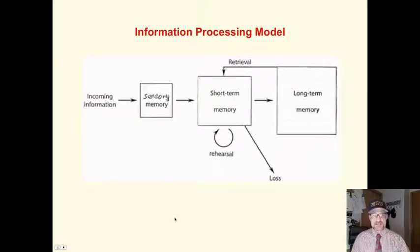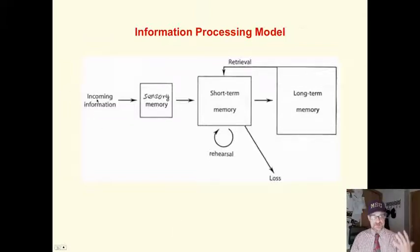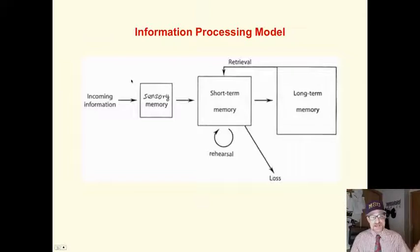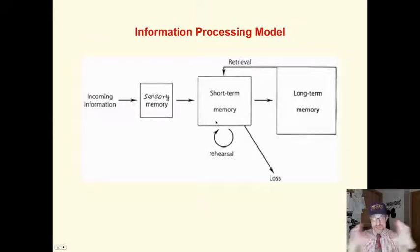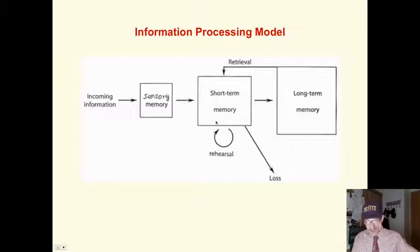Here is the information processing model. We will be referring to this. Information comes in through our sense memory — this would be like the keyboard, using that computer analogy. From there, bits of that sensory data go to short-term memory. We choose what to attend to, what to bring to short-term memory. Short-term memory is short and small, and from there we choose, if we wish, to store things in long-term memory.